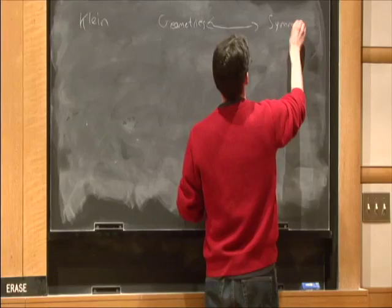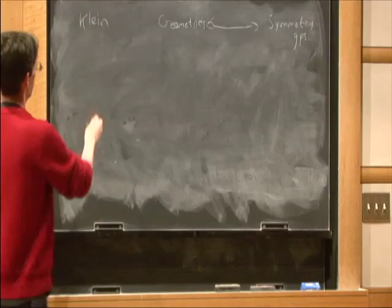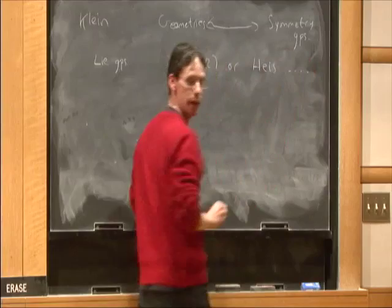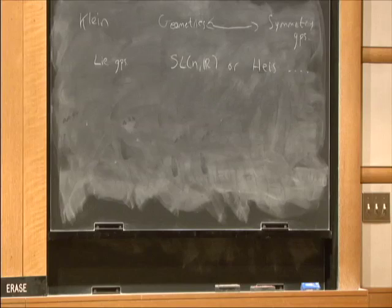So we could look, first of all, at Lie groups. Like we could look at SL(n,R), or Heisenberg groups, or dot, dot, dot. And for each Lie group, there's a kind of natural geometry associated to it, at least up to constants. And one wants to understand, for each group, what is the corresponding isoperimetric inequalities.